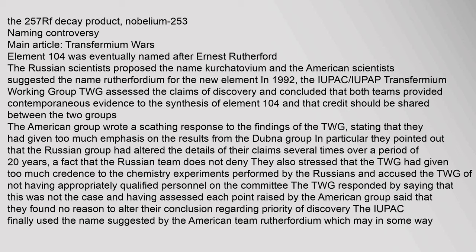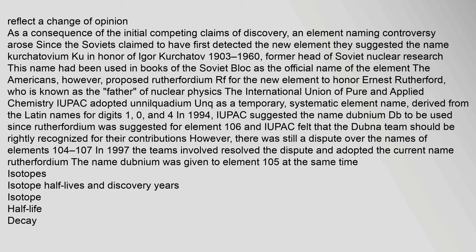In particular, the Americans pointed out that the Russian group had altered the details of their claims several times over a period of 20 years, a fact that the Russian team does not deny. They also stressed that the TWG had given too much credence to the chemistry experiments performed by the Russians and accused the TWG of not having appropriately qualified personnel on the committee. The TWG responded by saying that this was not the case and, having assessed each point raised by the American group, said that they found no reason to alter their conclusion regarding priority of discovery. The IUPAC finally used the name suggested by the American team, Rutherfordium.